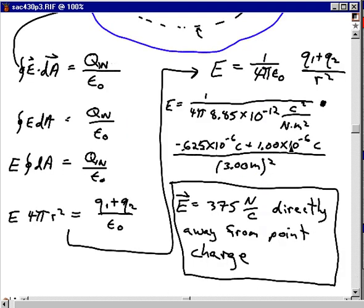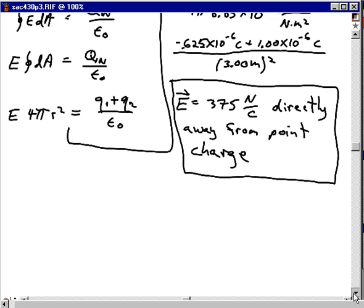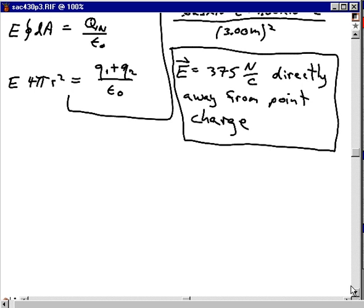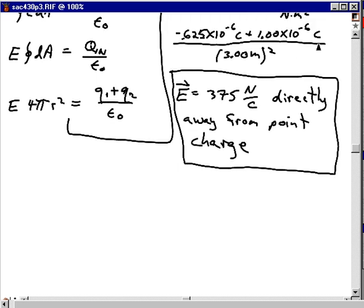Had this turned out to be negative up top, I would have emphasized that I was talking about the magnitude of the electric field, and we would have had the electric field directed toward the center of the circle. We would have understood that the direction was toward the center of the circle. But we had a total amount of charge inside that was positive, and so the electric field is directed exactly away from the center of the sphere.